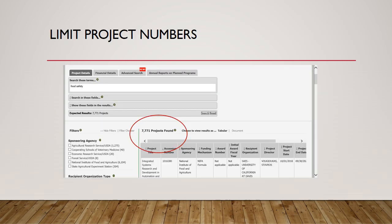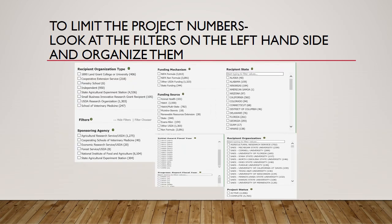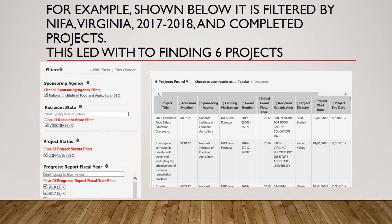After you type in what you are looking for, it gives you a whole list of projects. The next step is to limit the projects. To limit the projects, you can click on any of the filters on the left hand side. For example, I filtered my projects funded by NIFA only, only in Virginia, from 2017 to 2018, and completed projects. This narrowed my search from 7,779 to 6 projects.